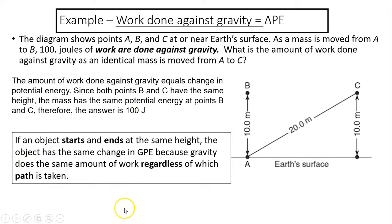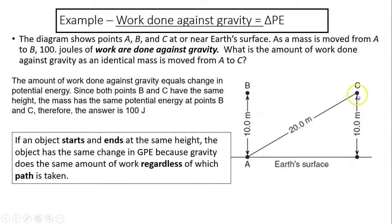Now for another example: work done against gravity equals the change in potential energy. A diagram shows points a, b, and c at or near Earth's surface. Moving the mass from a to b does 100 joules of work against gravity. Since b and c are at the same height, they have the same potential energy, so moving from a to c also requires 100 joules of work against gravity. Gravity does the same amount of work regardless of which path is taken.